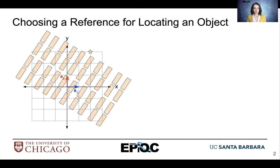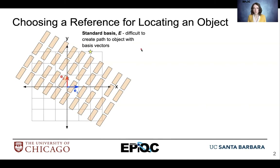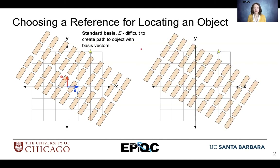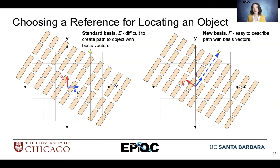If we're just moving the xy plane, it's pretty easy, but now we have some obstacles in the way. With the standard basis vectors e1 and e2, it's difficult to create a path to that object. But what if we take those two vectors and tilt them slightly — shift them up by a particular angle? It becomes much easier to find a clear path to our point of interest, the star, using this new basis f that contains the vectors f1 and f2.